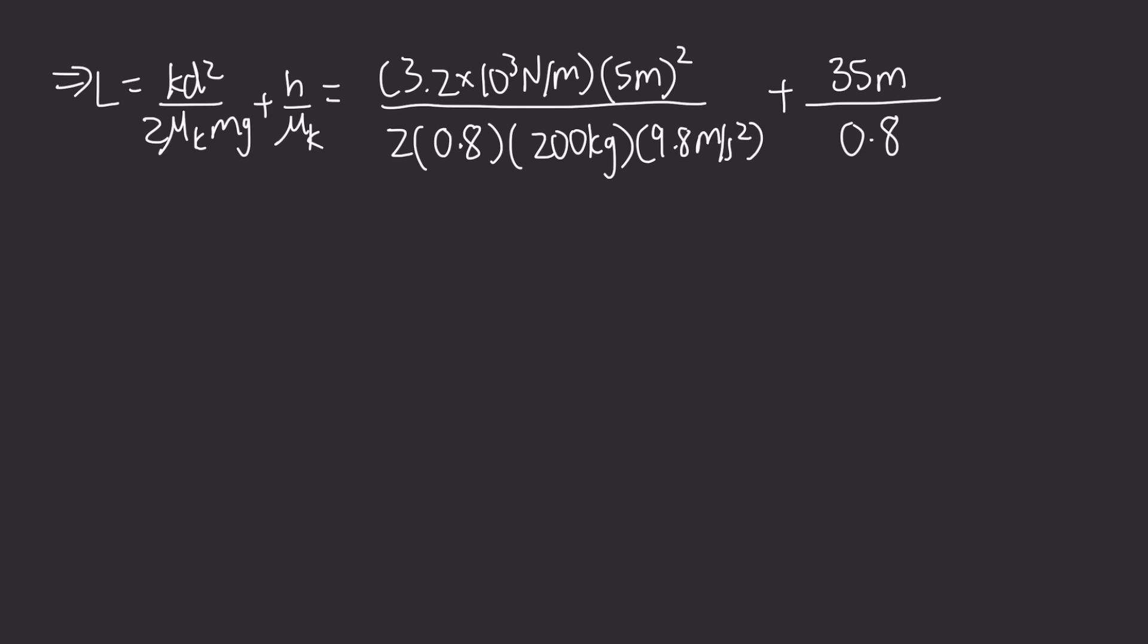We get 69.3 meters. This means that after the girl has arrived at the ground level, she will travel a distance of 69.3 meters until friction brings her to a stop. I hope you've learned something new and I hope to see you guys in the next video where we'll be going more in depth into potential energy.